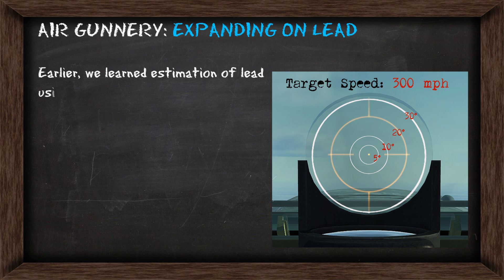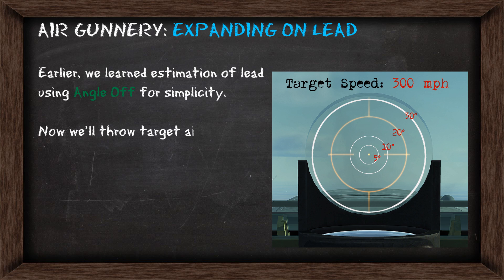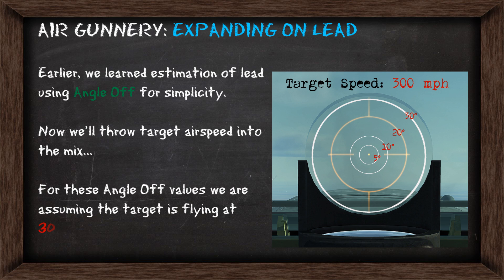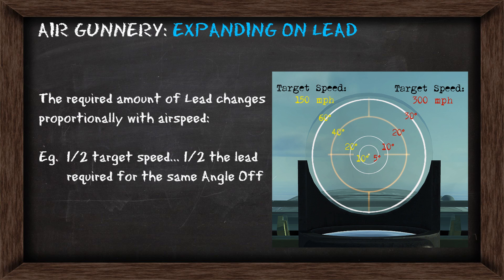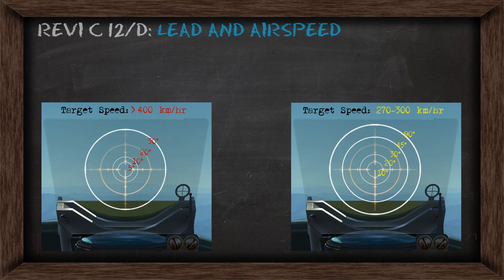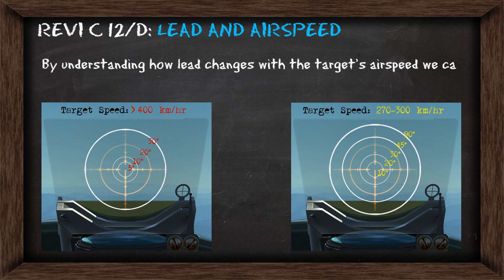Earlier we learned estimation of lead using angle-off primarily for simplicity. Now we'll throw target airspeed into the mix as well. For these angle-off values, we're assuming the target's flying about 300mph. The required amount of lead will change proportionally with airspeed. So if you were to halve the target's speed, you're going to require half the amount of lead for the same angle-off. By understanding how lead changes with the target's airspeed, we can now estimate lead more accurately with angle-off in two simple scenarios.